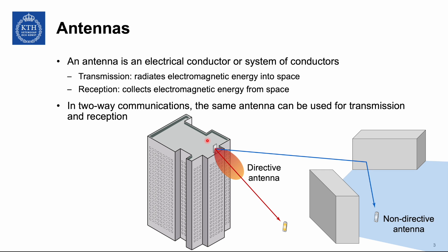Here is a particular example. You have a base station deployed at the top of a building with different user devices to reach. In these scenarios we might use different types of antennas — maybe a directive antenna pointing most of the energy downward toward users. While the user device might not want a directive antenna, because we want the mobile phone to be able to be rotated in any direction so it can always pick up signal energy from wherever we are.